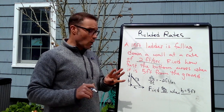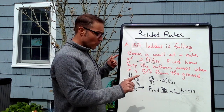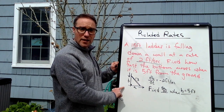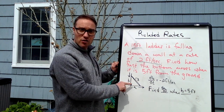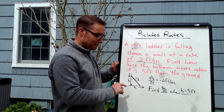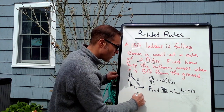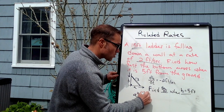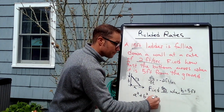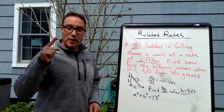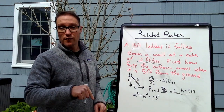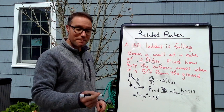Now I'm on step 3 — relate the quantities. I have A, I have B, and I have this 13. What relates these? I don't know anything about the angles other than that I have a right angle, so Pythagoras is our best bet. A² + B² = 13² — don't write C squared, write 13 squared. And don't spend too many brain cells squaring 13; when you take the derivative, the derivative of any constant is zero.